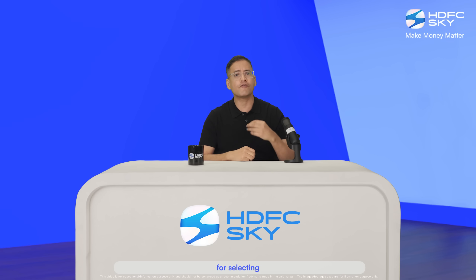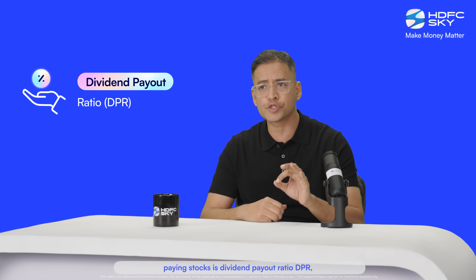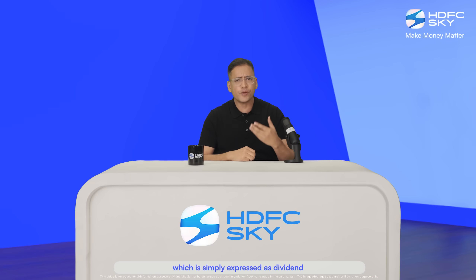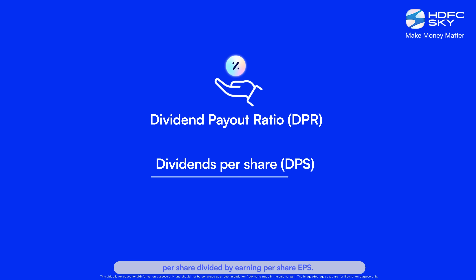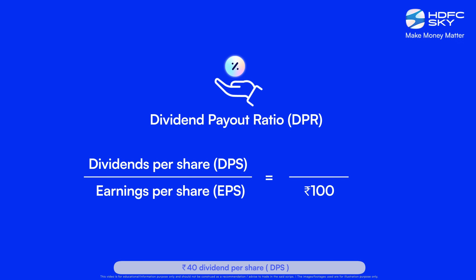Hence the second important criteria for selecting consistent dividend paying stocks is dividend payout ratio (DPR), which is simply expressed as dividend per share divided by earning per share (EPS). For example, if a company's earning per share in a financial year is 100 rupees and the company decides to pay 40 rupees dividend per share, the dividend payout ratio will be 40 rupees divided by 100 rupees equals 40 percent — signifying that the company distributed 40 percent of its profits to shareholders as dividend.